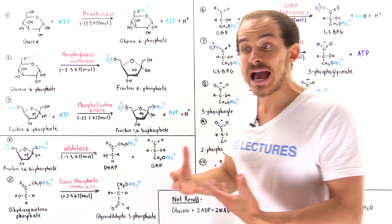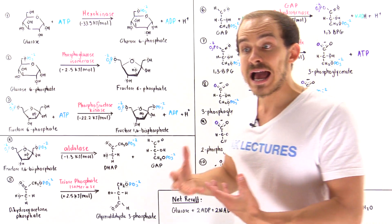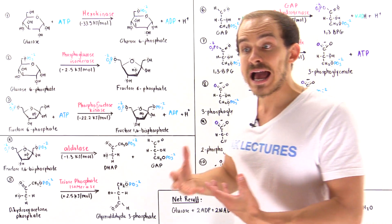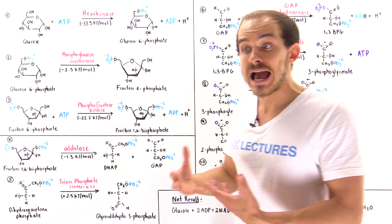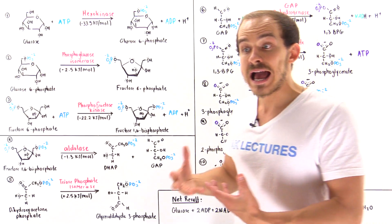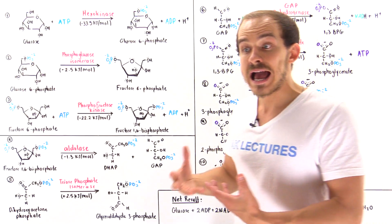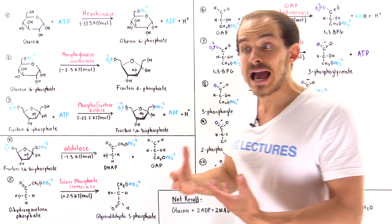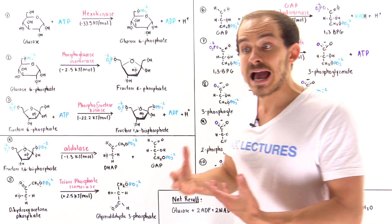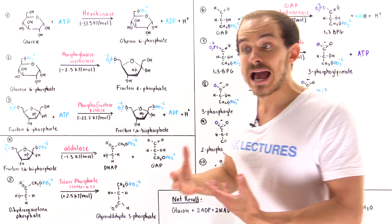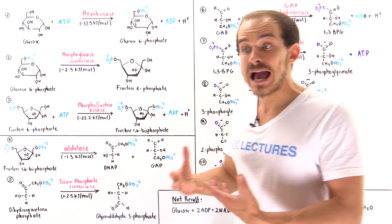Just as glucose is an isomer of fructose, DHAP is an isomer of GAP—both are trioses, meaning three-carbon sugars. The enzyme triose phosphate isomerase converts DHAP into glyceraldehyde-3-phosphate. So the net result of stage two is that fructose-1,6-bisphosphate is cleaved into two identical three-carbon GAP molecules, both of which proceed to stage three.